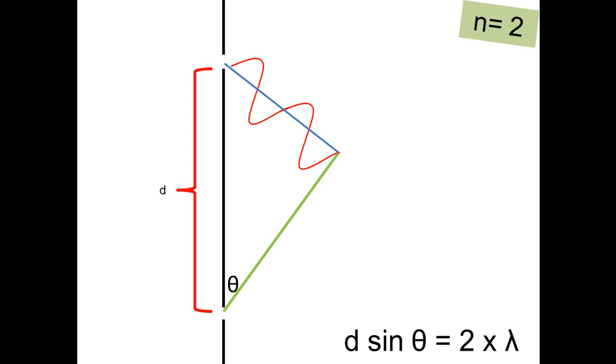This time your opposite length is actually two wavelengths, so this time d sin θ equals 2λ. And of course it'll be the same for the next one where you can have possibly like three wavelengths.